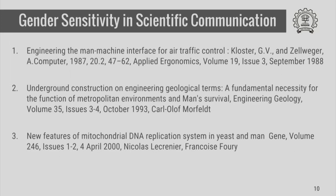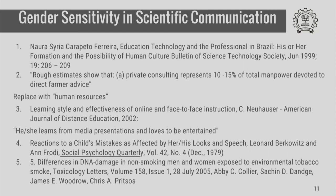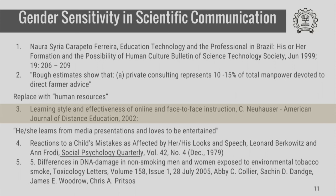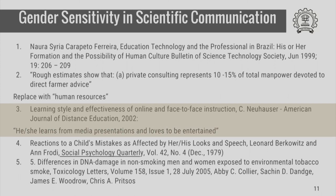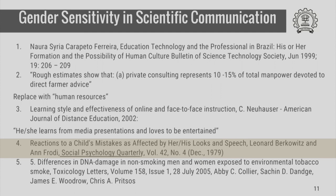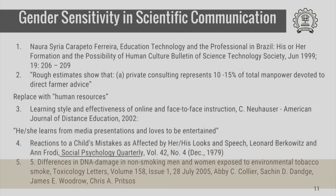These are further examples of how to avoid gender insensitivity in communication, from older articles. Most journals now do not accept male-specific terms such as man-machine, man's survival, yeast and man, and so on. These more recent examples from journals show where gender-sensitive or gender-aware language is used. The first example shows awareness that the professional can be both men and women. The third example shows how people — who learn from media presentations and love to be entertained — can be both men and women. In the fourth example, the researcher is aware that a child can be both male and female. The fifth example uses gender-aware language, referring to DNA damage in non-smoking men and women in the title, so that a researcher is better alerted to the contents of the article.